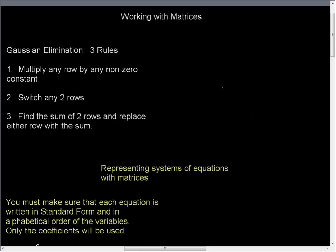Let's get started. In a previous video, I addressed the setup of the matrix. We are going to be very interested in the Gaussian elimination rules. Recall we can multiply any row by any non-zero constant, we can switch any two rows, and we can find the sum of two rows and replace either row with the sum.